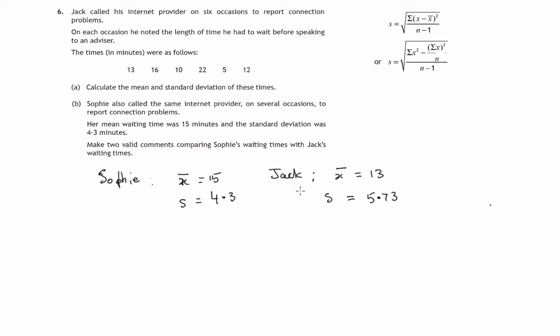So we're asked to make two valid comments comparing Sophie's waiting times with Jack's waiting times. Now the main idea here is that if the standard deviation is smaller, then it means the waiting times are clustered very close to the mean - they don't deviate too much from that mean. If the deviation is larger, as in Jack's case, then the waiting times are slightly more spread out from around the mean. So we would say two things. First of all, Sophie's average waiting time was greater than Jack's waiting time.